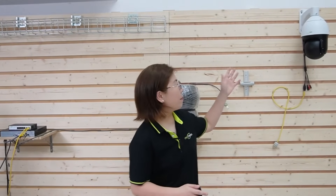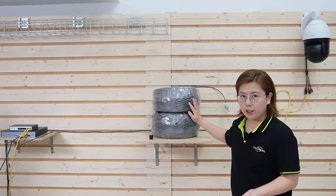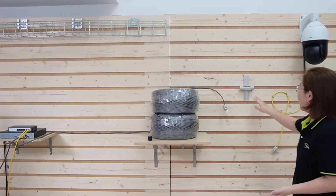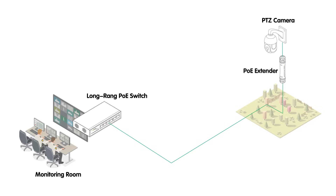Next, we're going to connect our PTZ camera using long-range PoE technology. In between, we have 500 meters in total. On this side, you can see we have a PoE adapter. The reason we need this adapter is because the long-range PoE switch has the long-range chipset built in. However, when it sends the signal to the camera, it's just an ordinary camera. That's why we need this adapter — so it can send the signal back to the switch and the whole thing will work.